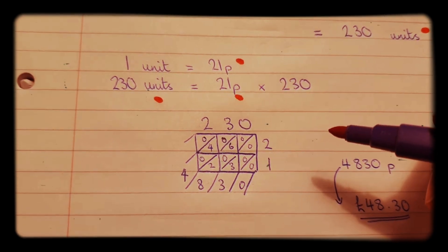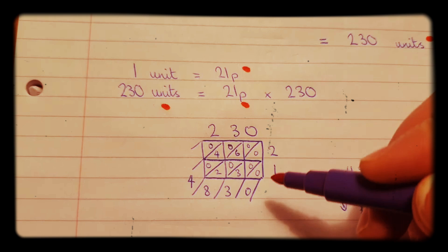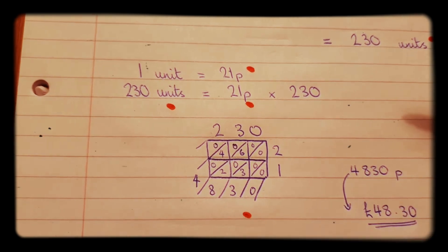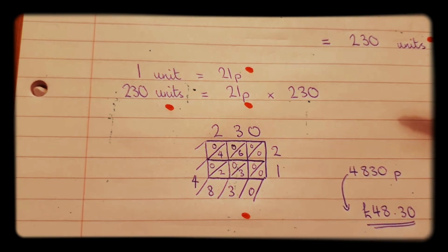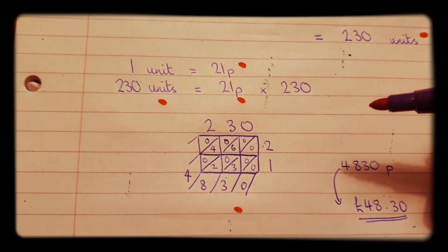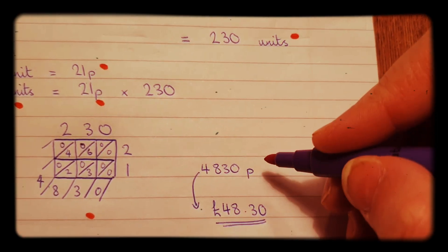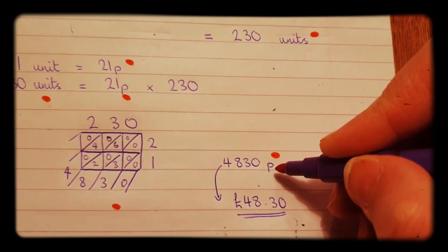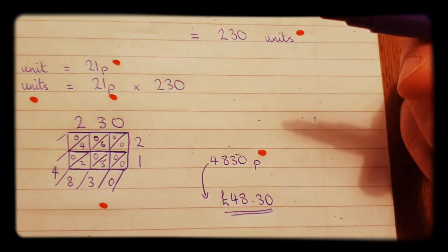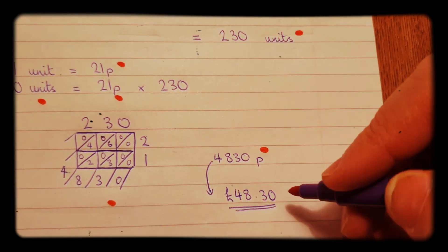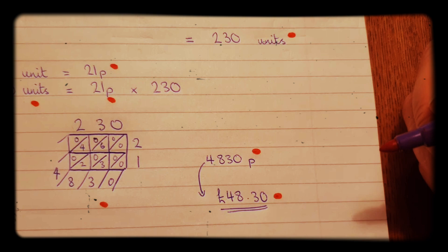As it's a non-calculator question, you'll just do your long multiplication method of choice. In this case I've used this one, you might use a different one, and you will get 4830p because we were dealing in pence before. When you convert it to pounds it will be 48 pounds and 30 pence.